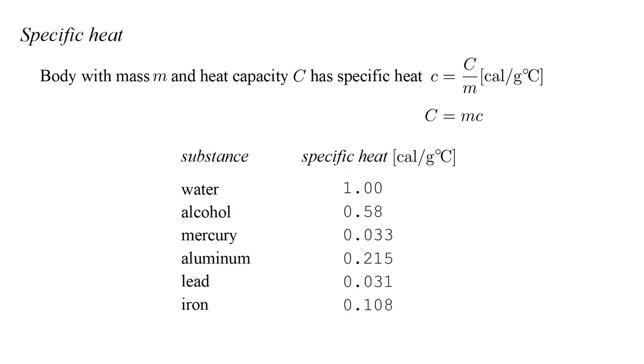Specific heat is an inherent property of a material. Values for a few substances are shown here. The specific heat of water, by definition, is one calorie per gram degree Celsius.